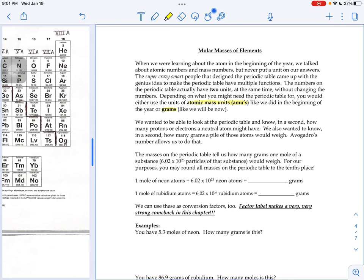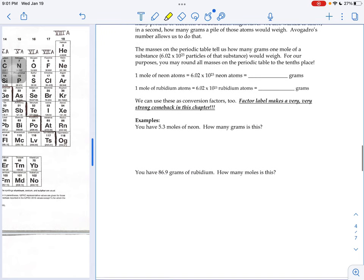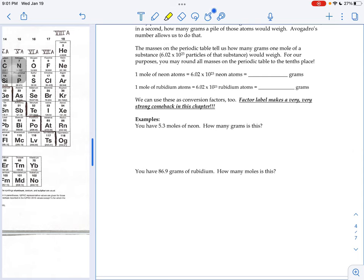Those masses we call molar masses. They are the mass if you were to have 6.02 times 10 to the 23rd atoms of your substance. So if you had a mole's worth of neon, 6.02 times 10 to the 23rd atoms of neon, and you were to pour them on a balance, you could look at your periodic table and the periodic table tells you how much that pile would weigh: 20.180 grams.